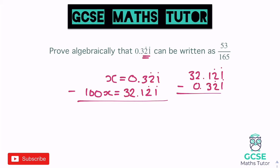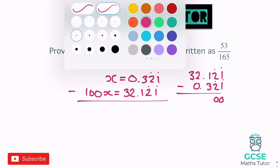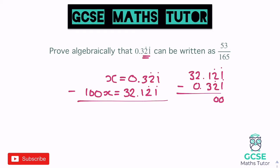When we take these away from each other, you've got to be very careful. Doing the working out to the side: 32.121 take away 0.321. The 1s and 2s at the end cancel, but we've got 1 take away 3, so we need to borrow. 11 take away 3 is 8, then 1 take away 0 is 1, and 3 at the end, giving 31.8. So 99x equals 31.8 — being very careful with the borrowing. Times both sides by 10 to remove that decimal.